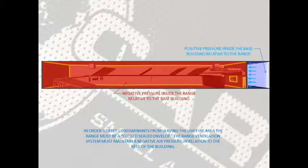In order to keep contaminants from leaving the live fire area, the range must be a closed, sealed envelope. The ventilation system must also maintain a negative air pressure inside the range as relative to the rest of the building.